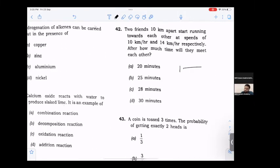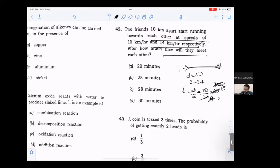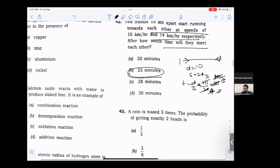Two friends are 10 km apart. They walk towards each other at speeds that add up. Time equals distance upon speed: 10 upon 24, into 60 minutes. This gives 10 upon 6, which is 5 upon 2, equals 25 minutes.